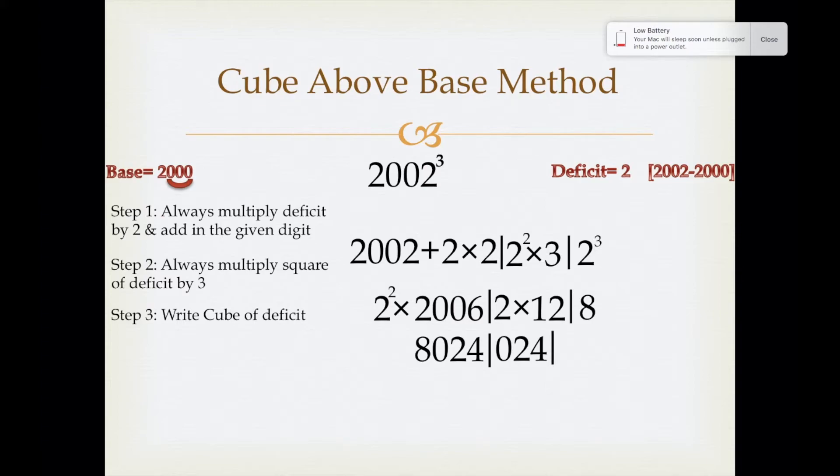Now in the last step, we'll have to write 008 instead of 8. As I have already told you, in the base 2000, there are three zeros. To make 8 a three digit number, we will prefix two zeros before 8 and it would become 008.